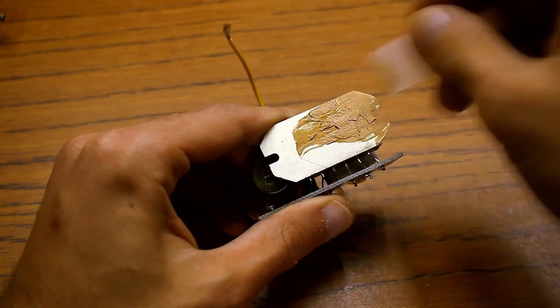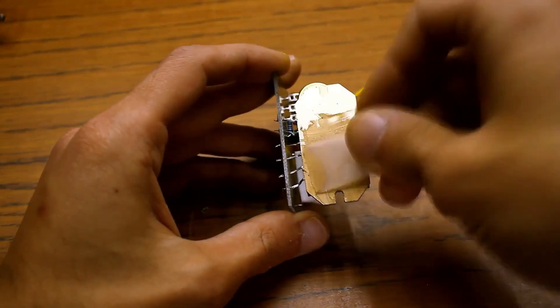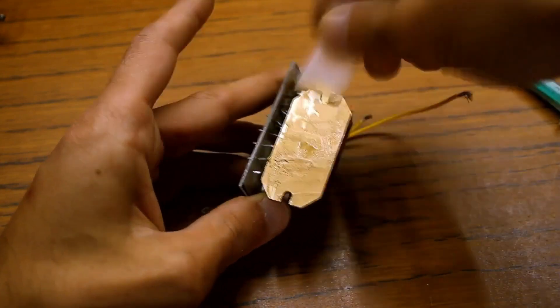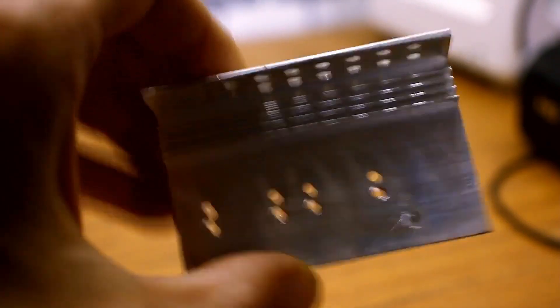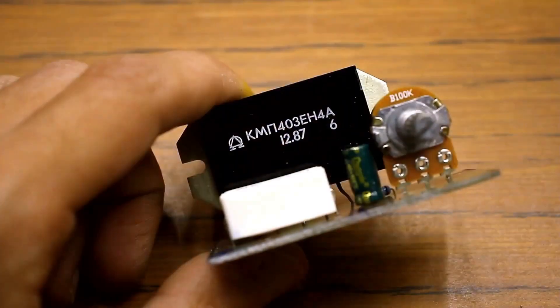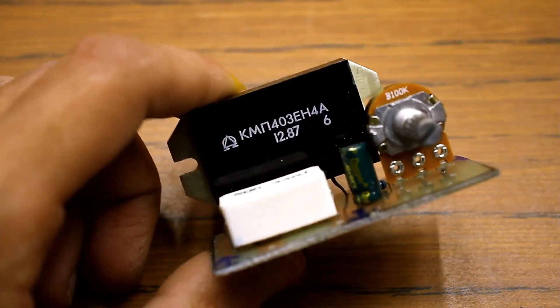And now let's see what it can do. But first, we evenly apply thermal paste on the substrate and prepare the microassembly for installation on the heatsink. The heatsink is from a computer power supply. It's a bit small, of course, but we won't be stressing the microchip for long, so it'll do.